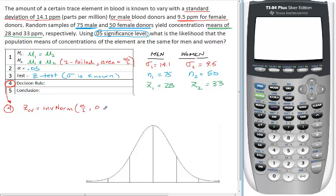We're doing inverse norm for a z value. Since it's two-tailed, I have to use alpha over 2. The mean of a z distribution is zero and the standard deviation is one. So we'll put in inverse norm of alpha over 2 - that's .05 divided by 2, which is .025, with mean zero and standard deviation one.